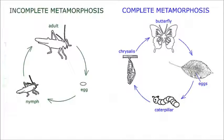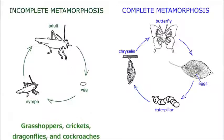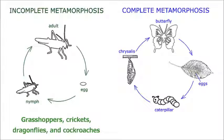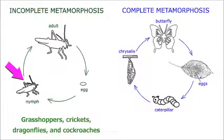Grasshoppers, crickets, dragonflies, and cockroaches have incomplete metamorphosis. They go through three life cycle stages: egg, nymph, and adult.